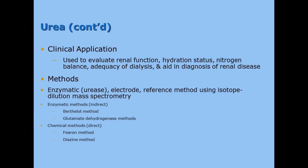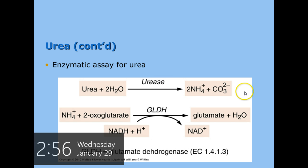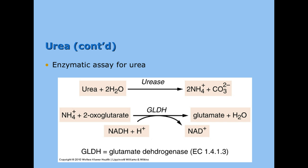Some of the methods we use are called the enzymatic urease method, sometimes called the Berthelot method, the glutamate dehydrogenase method, and the ferron or diazine method. In the assay, urea in the blood plus two molecules of water in the presence of urease produces two ammonium and two carboxyl units. The ammonium plus oxoglutarate with another enzyme creates glutamate and water. We are then testing for the glutamate dehydrogenase or the glutamate and water in the end — a couple of enzymatic reactions occurring in that test tube.